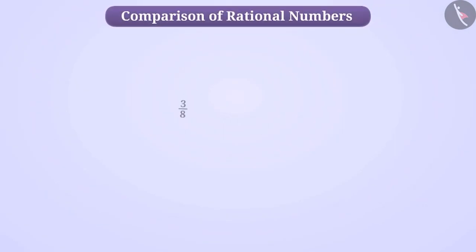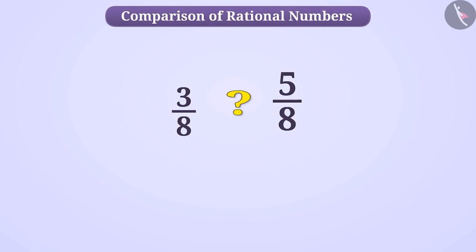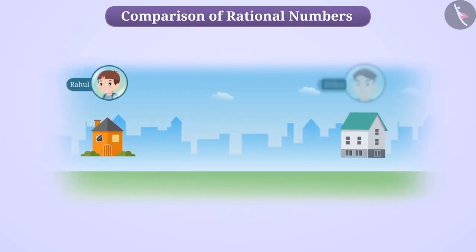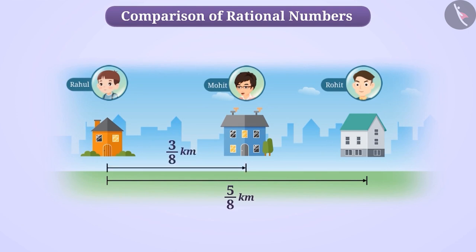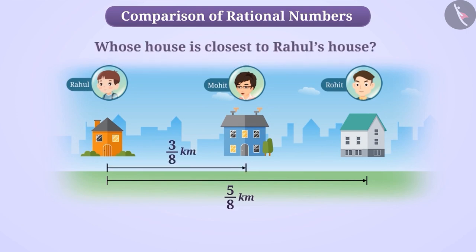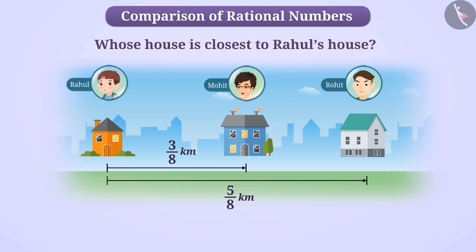When it comes to numbers, it becomes necessary to identify smaller and greater numbers. For instance, the houses of Rahul, Rohit and Mohit are in the same line. If the distance of Rohit's house from Rahul's house is 5/8 km and the distance of Mohit's house is 3/8 km, then to find whose house is nearer to Rahul's house, we need to compare 5/8 km and 3/8 km.